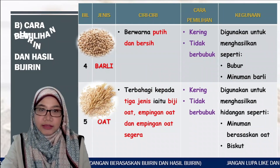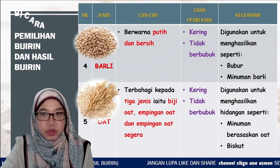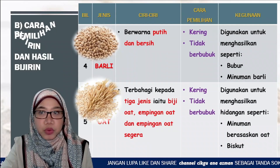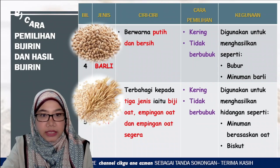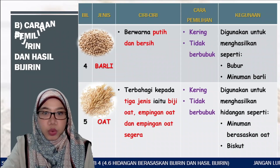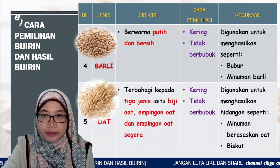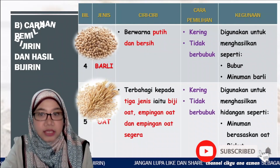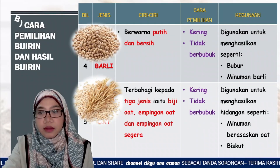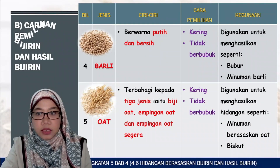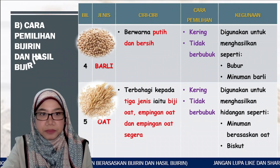Bijirin yang keempat ialah barli. Barli berwarna putih dan bersih. Cara pemilihan barli: kering dan tidak berbubuk. Biasa digunakan untuk menghasilkan bubur dan minuman barli. Bijirin yang kelima ialah oat. Oat terbahagi kepada 3 jenis iaitu biji oat, empingan oat dan empingan oat segera. Cara pemilihan oat: kering dan tidak berbubuk. Biasa digunakan untuk menghasilkan minuman berasaskan oat, biskut atau mengikut resepi yang bersesuaian.